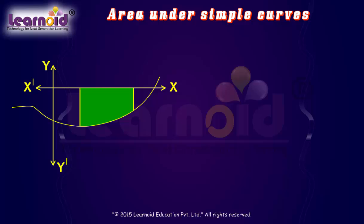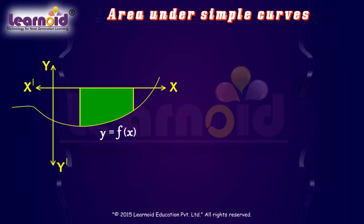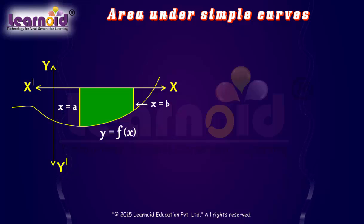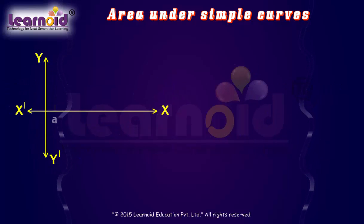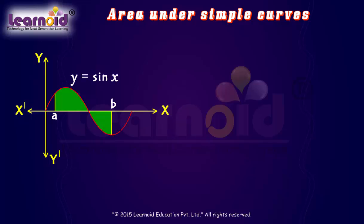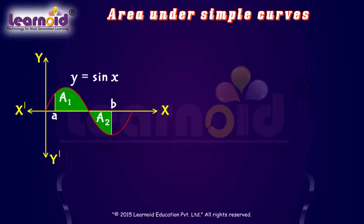When the curve under consideration is below the x-axis, the function f(x) will have negative values. So the area bounded by the curve, the x-axis, and ordinates x = a and x = b will come out to be negative. When area is negative, we take its absolute value. If some portion of the curve is above the x-axis and some is below, the total area is the sum of A1 and |A2|.